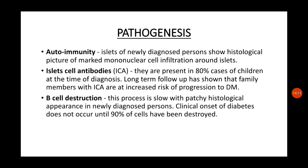Islet cell antibodies (ICA) are present in 80% of children at the time of diagnosis. Long-term follow-up has shown that family members with ICA are at increased risk of progression to diabetes. Beta cell destruction is a slow process with patchy histological appearance in newly diagnosed persons, and clinical onset of diabetes does not occur until 90% of the beta cells have been destroyed.